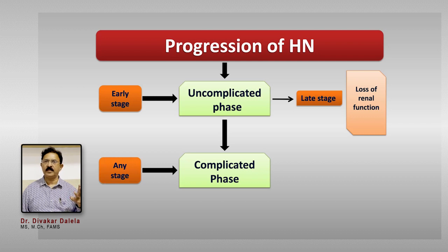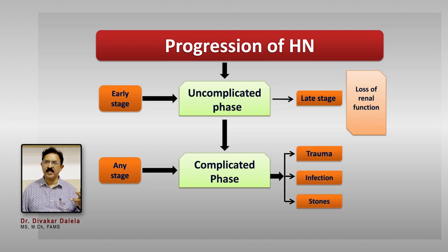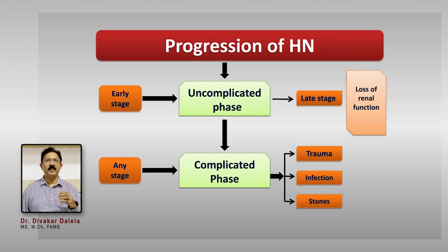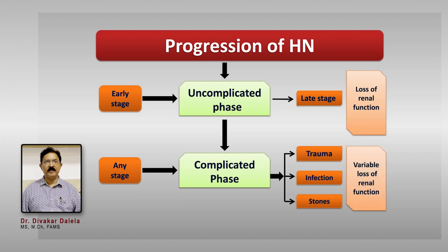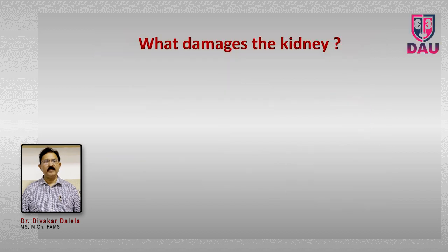Some patients develop complications, which can occur at any stage in the natural history of disease. These are three complications: trauma, infection in the collecting system and parenchyma, or the development of secondary stones. When these things happen, they create additional trauma to the renal parenchyma, which accentuates the damage that has been existing previously.